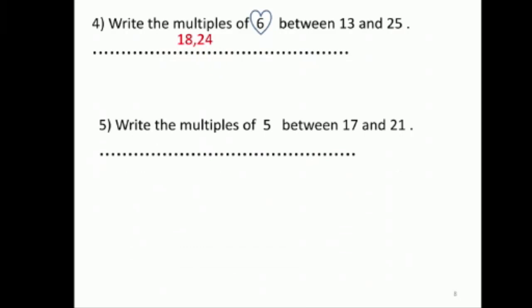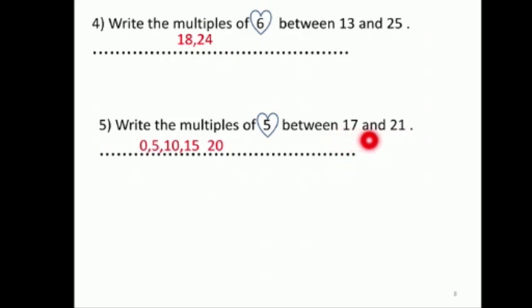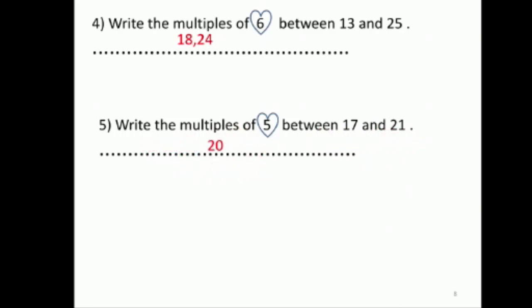Multiple of five between seventeen and twenty-one. I have to find those between — greater than seventeen and less than twenty-one.